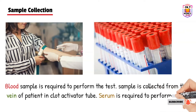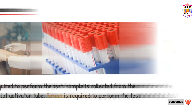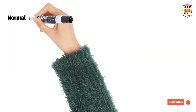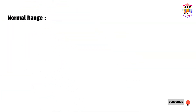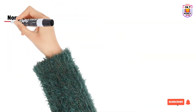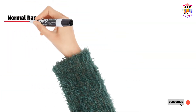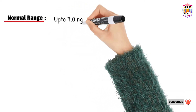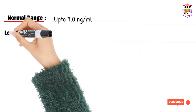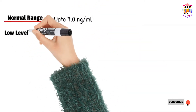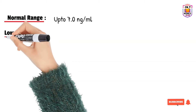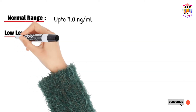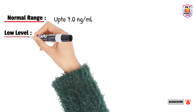The AFP test is done using serum. For normal ranges, we categorize results into three categories. The normal range is up to 7 nanograms per mL, though this may depend on each laboratory.